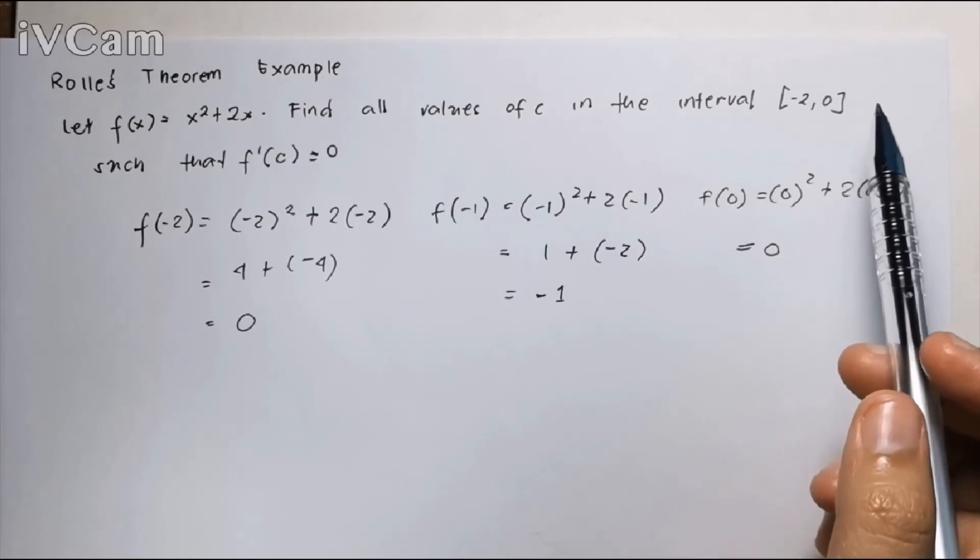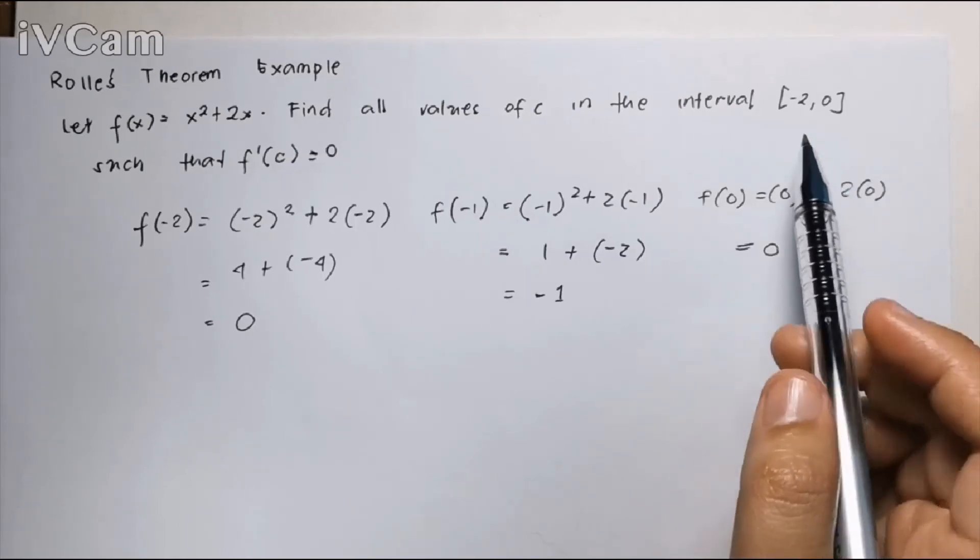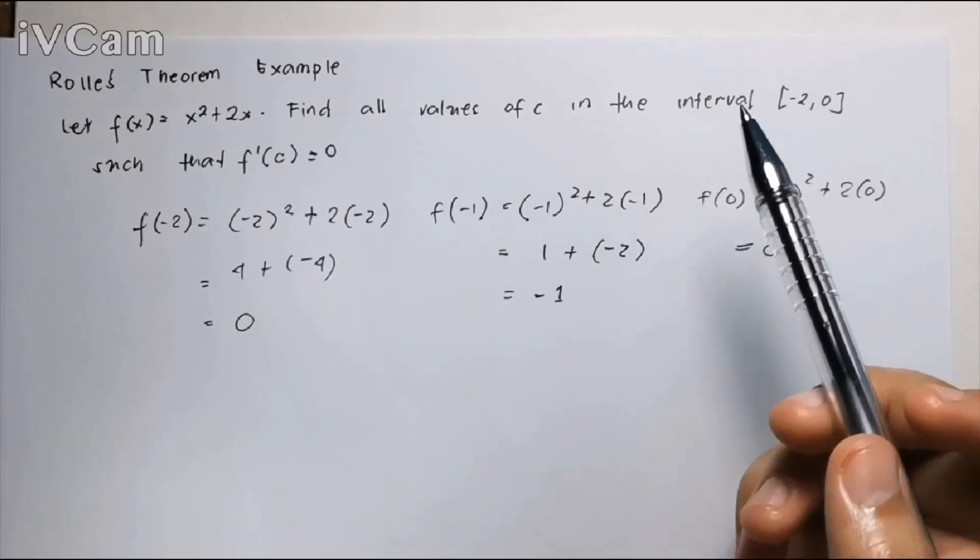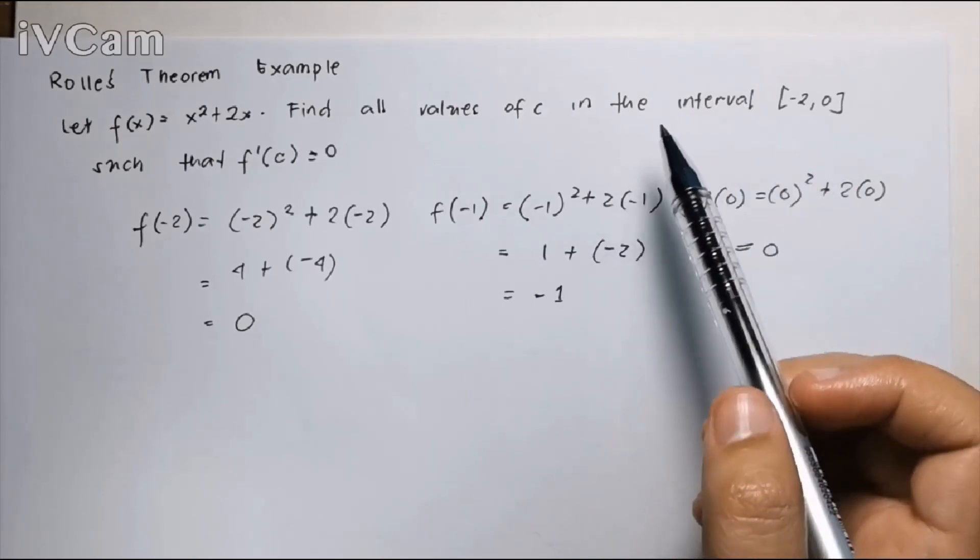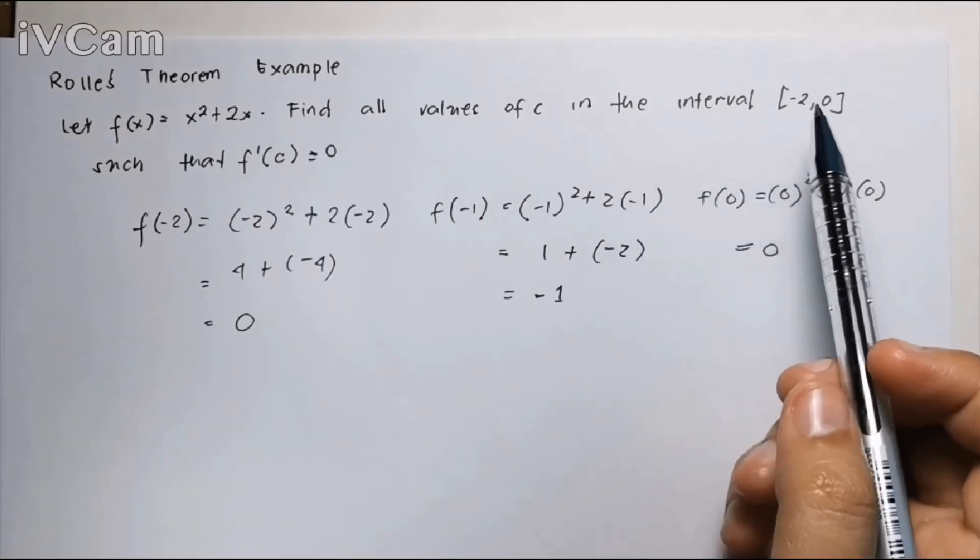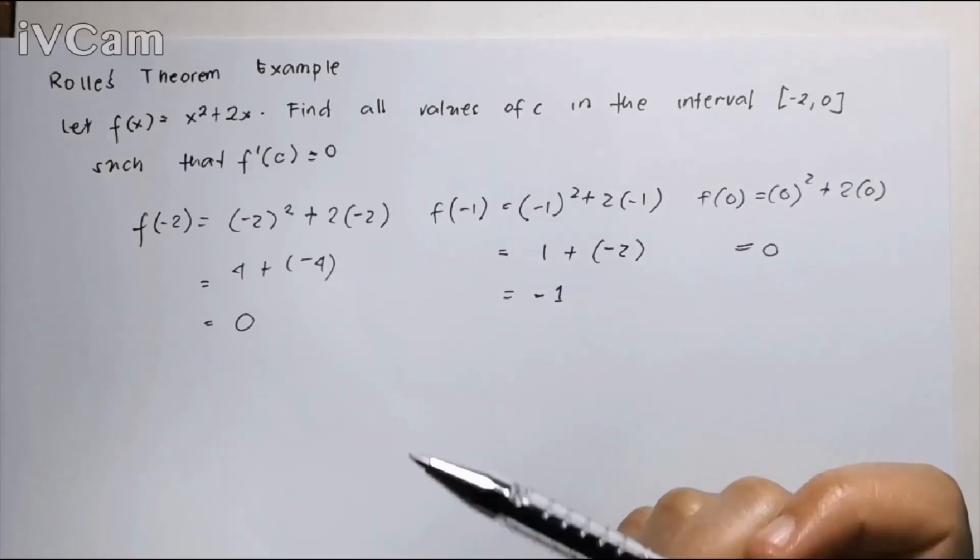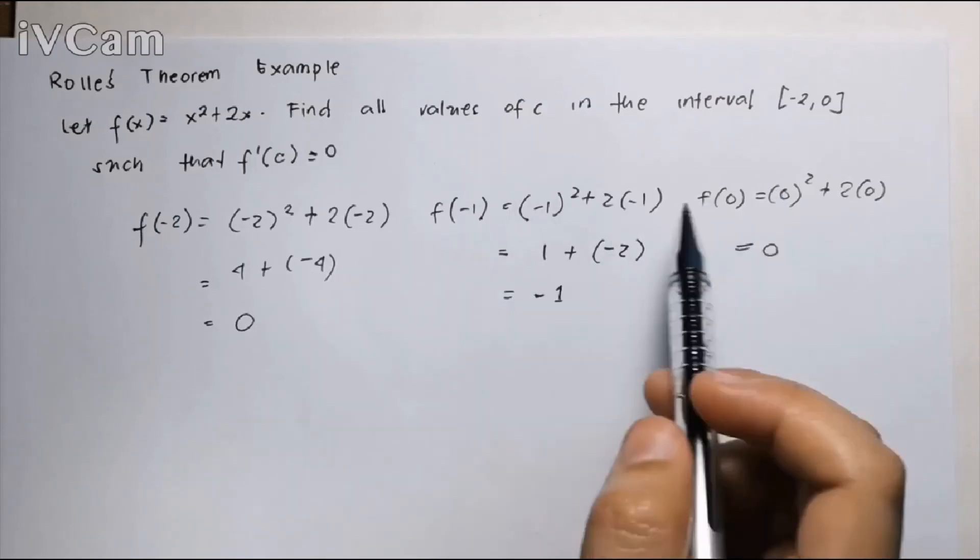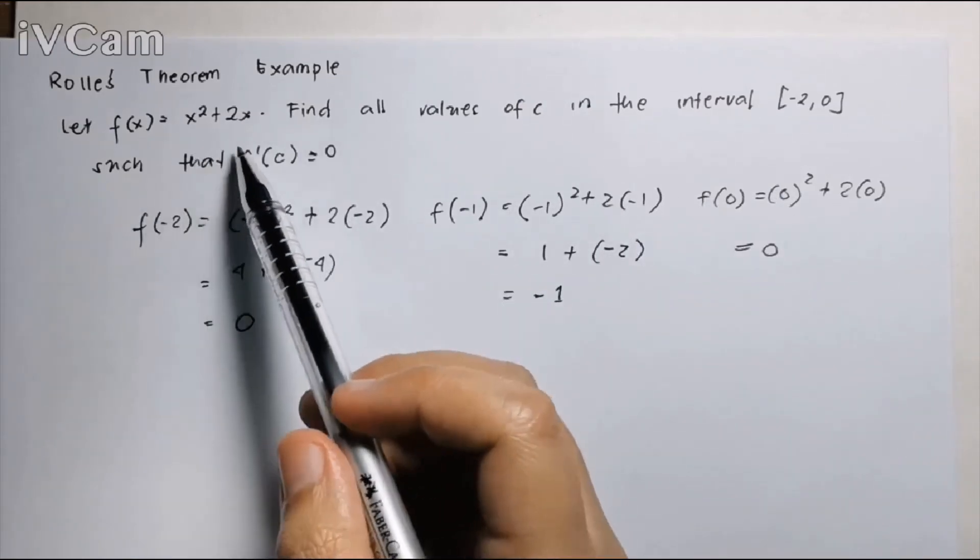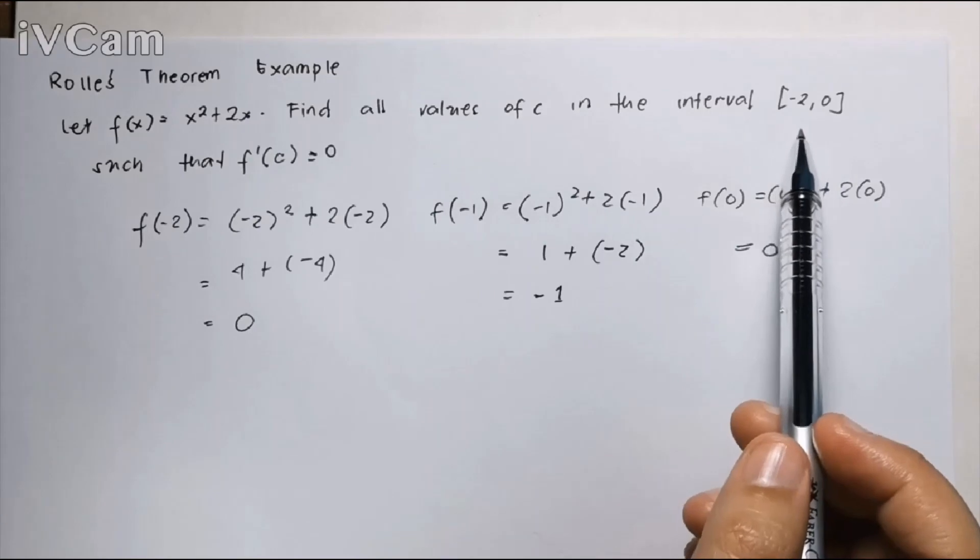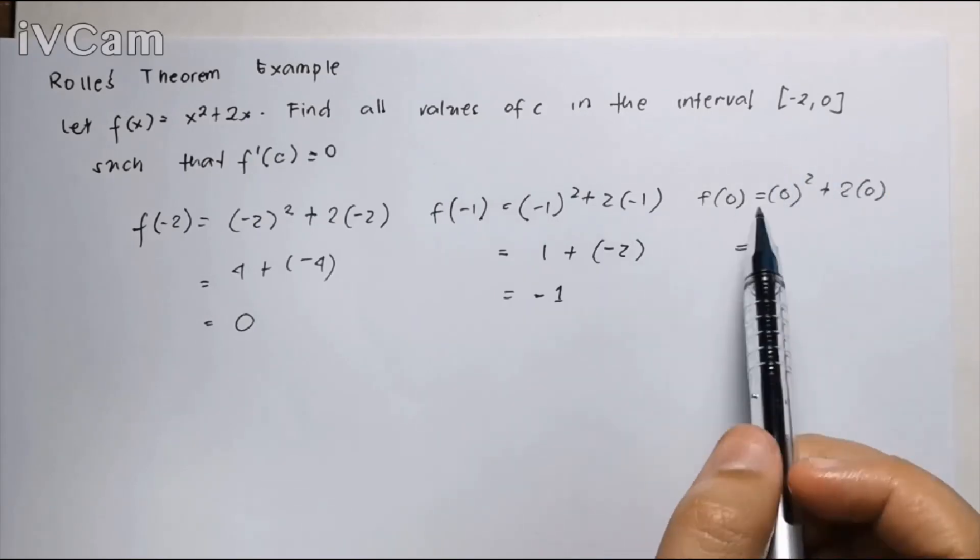This is the easiest test that we can do. However, there are some other processes in which you can find if there is discontinuity at a certain interval. This is already enough as a proof that x squared plus 2x is continuous at the negative 2 to 0 interval.